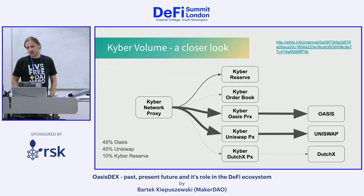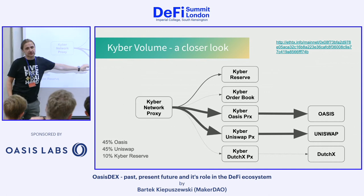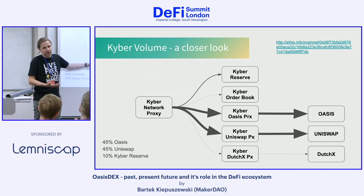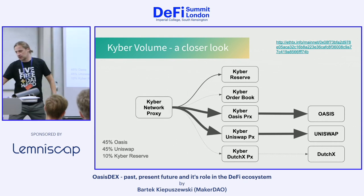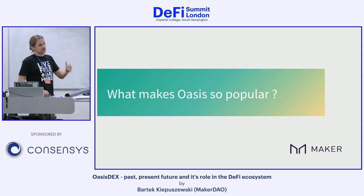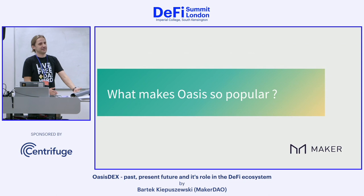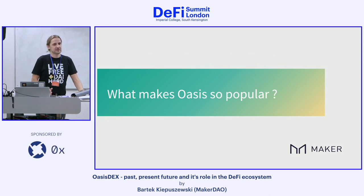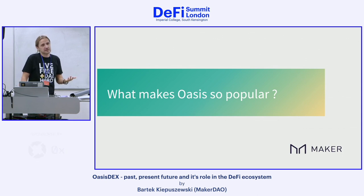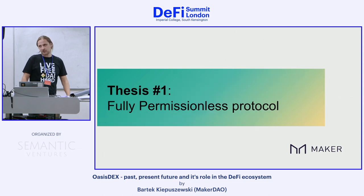If you adjust the Kyber volume — take away the volume that they brought to Oasis and Uniswap but isn't volume they served themselves — suddenly the picture looks a little bit different. The main question we keep asking ourselves is: why? Why, even though there's almost no marketing, is everyone using Oasis? I came up with three hypotheses. First, Oasis is a fully permissionless protocol, and I think this is the crucial thing.